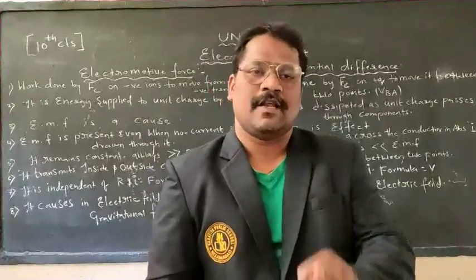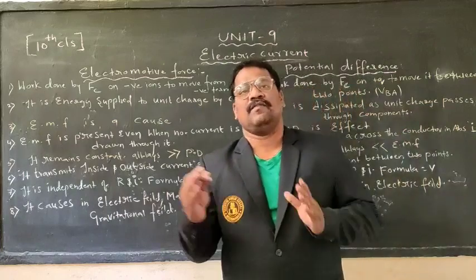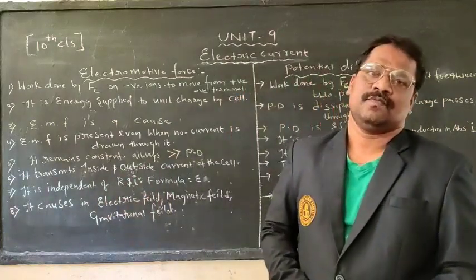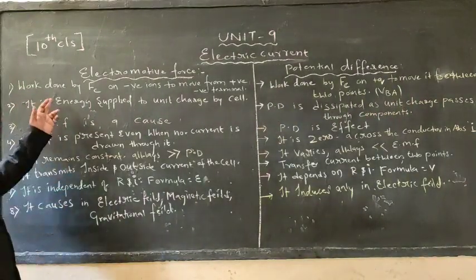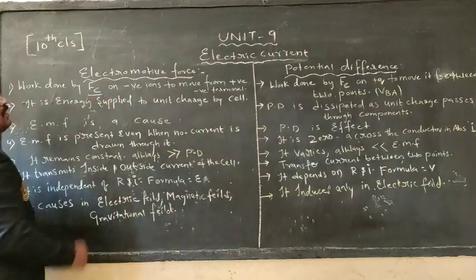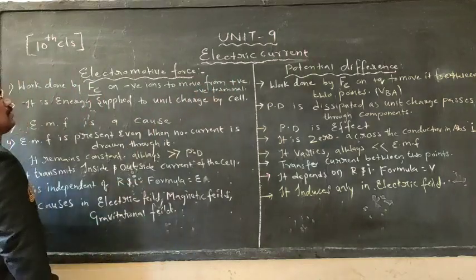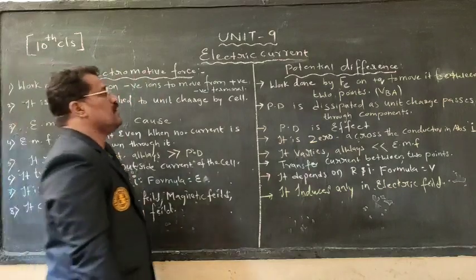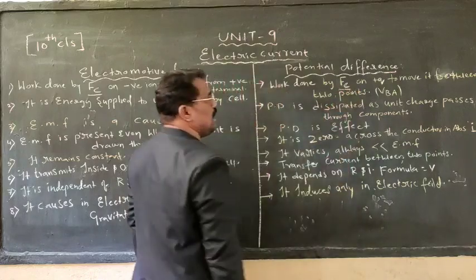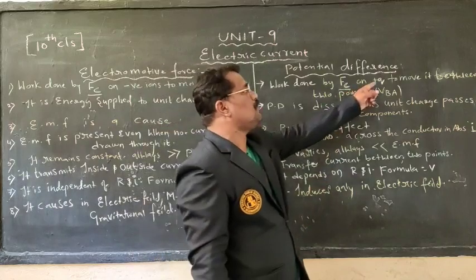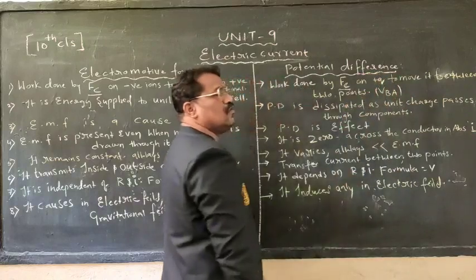Now let us study the differences between electromotive force and potential difference. First, electromotive force is work done by chemical force on all negative ions to move from the positive terminal to the negative terminal — that is electromotive force. Whereas potential difference is work done by electric force — Fe — on a unit positive charge to move between two points, that is high potential and low potential.